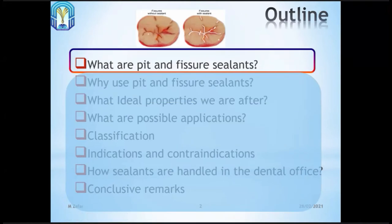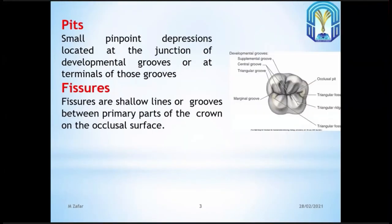What are pit and fissure sealants? To understand that, we need to understand what are pits and fissures, which is part of your dental anatomy and tooth morphology knowledge. A pit refers to pinpoint depressions on the occlusal table or chewing surface. The chewing surface of molars and premolars is not flat — it has curves, pits, and fissures. Fissures are shallow lines or grooves between parts of the crown.